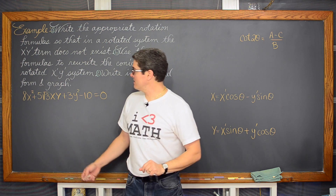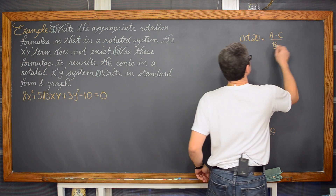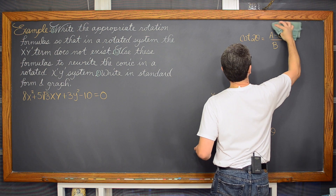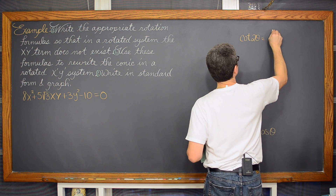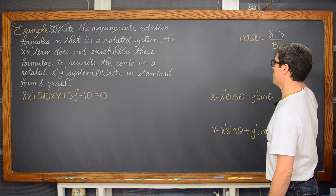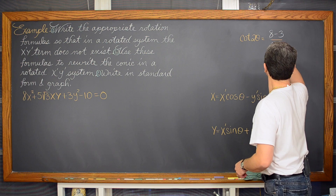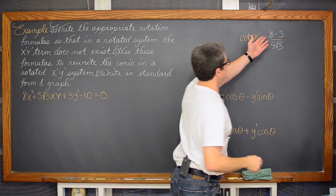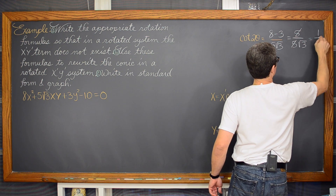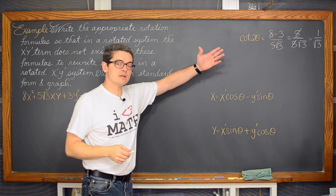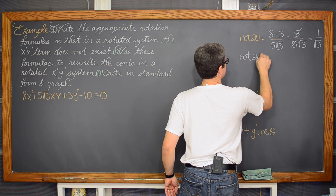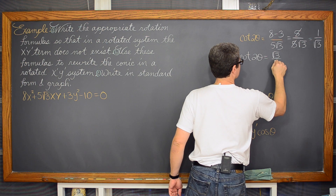We take cotangent of 2θ equals a minus c over b: a is 8, minus c which is 3, over b which is 5√3. Simplifying: 8 minus 3 equals 5, over 5√3. Canceling the 5s gives 1 over √3. Rationalizing by multiplying numerator and denominator by √3, we get cotangent of 2θ equals √3 over 3.